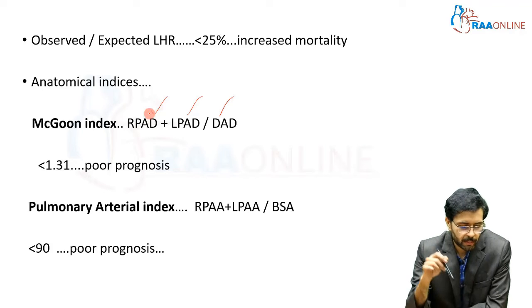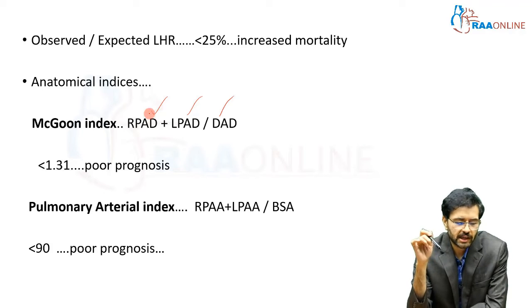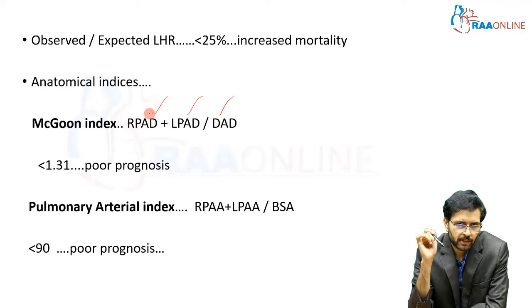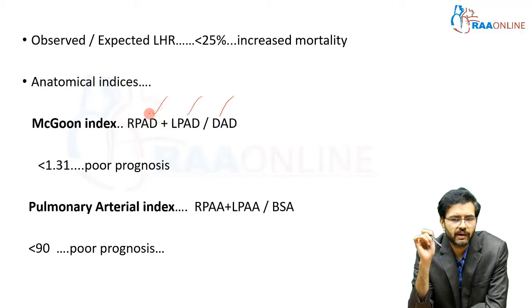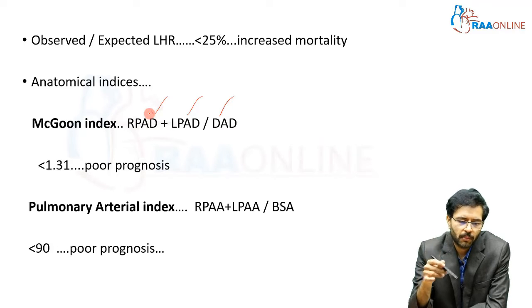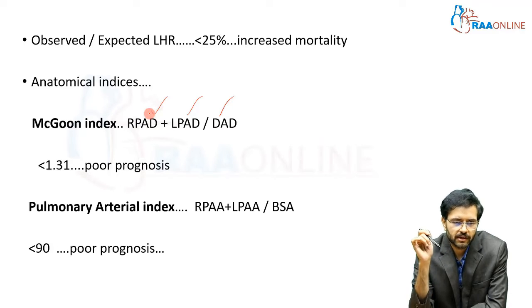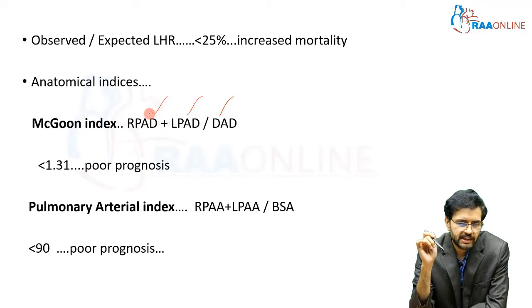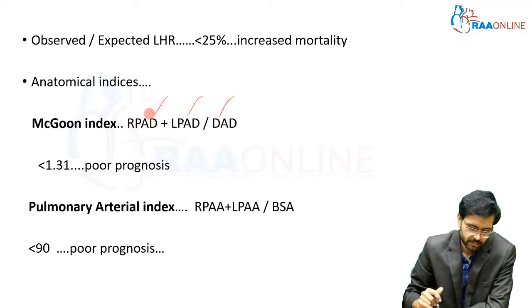Similarly, we have the pulmonary arterial index, wherein the right pulmonary arterial area plus the left pulmonary arterial area is divided by the body surface area. If the value is less than 90, it carries a poor prognosis.